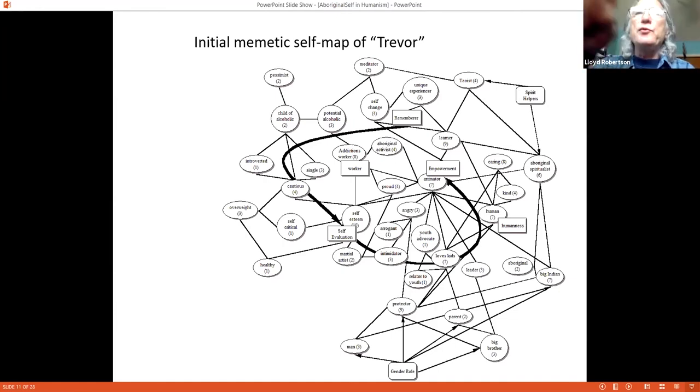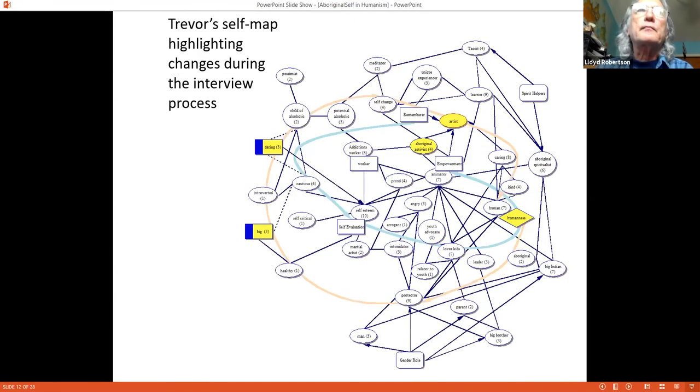Memes connect with others. The thick black line you see here is a trend of thought starting with being a rememberer, and that's part of how he defined himself. And he remembered being changing himself. He remembered his parents being alcoholic. And so he considered himself to be a potential alcoholic, and so on.